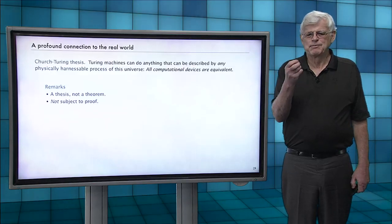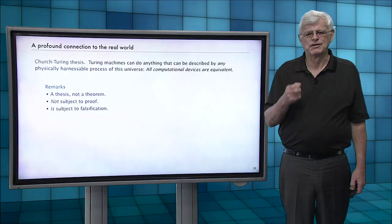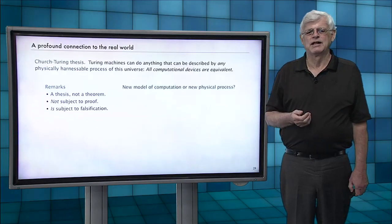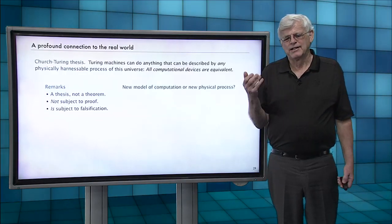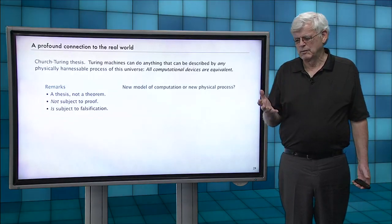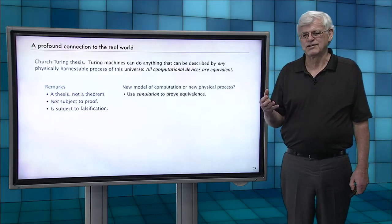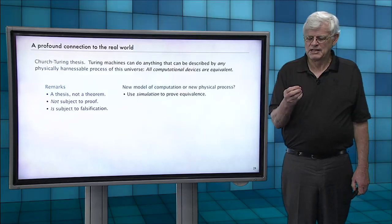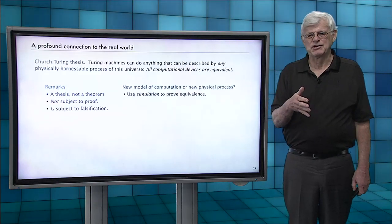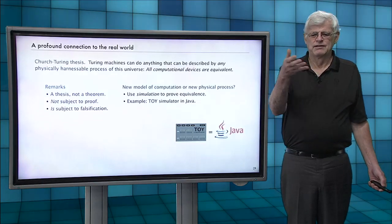Now, this is something that can't be proved because it relates to the universe, physical properties of the universe. It could be falsified, but we can never prove that it's true. So the thing is, ever since this thesis was articulated, if someone wants to study a new model of computation or a new discrete physical process, we can use simulation to prove that it's equivalent to some known physical process or current model of computation that we already know to be equivalent to Turing machines.